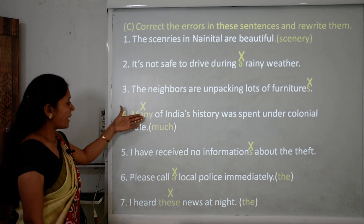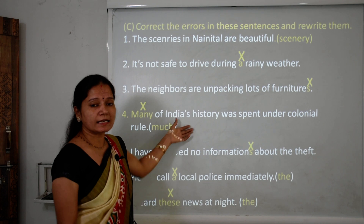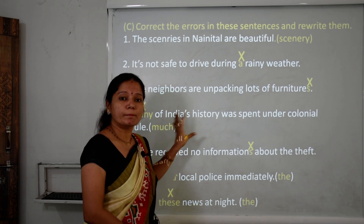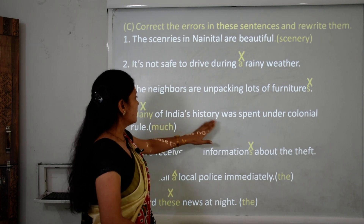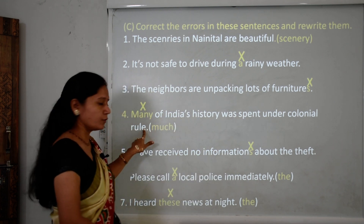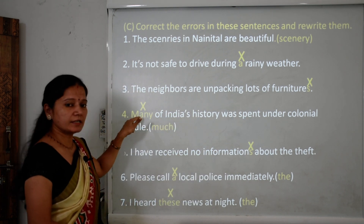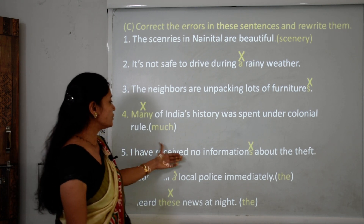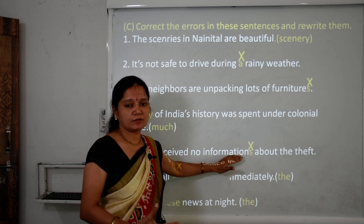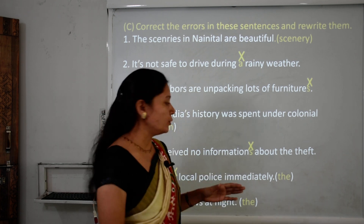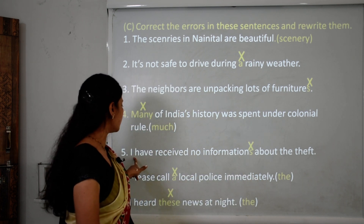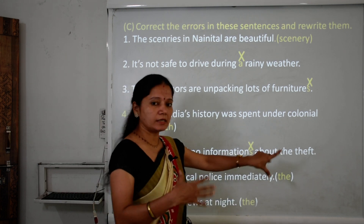Sentence 4: 'Many of India's history was spent under colonial rule.' History is uncountable, so we use 'much,' not 'many.' The correct sentence is: 'Much of India's history was spent under colonial rule.' Sentence 5: 'I have received no informations about the theft.' Information is uncountable and has no plural form. Remove the S — the correct sentence is: 'I have received no information about the theft.'